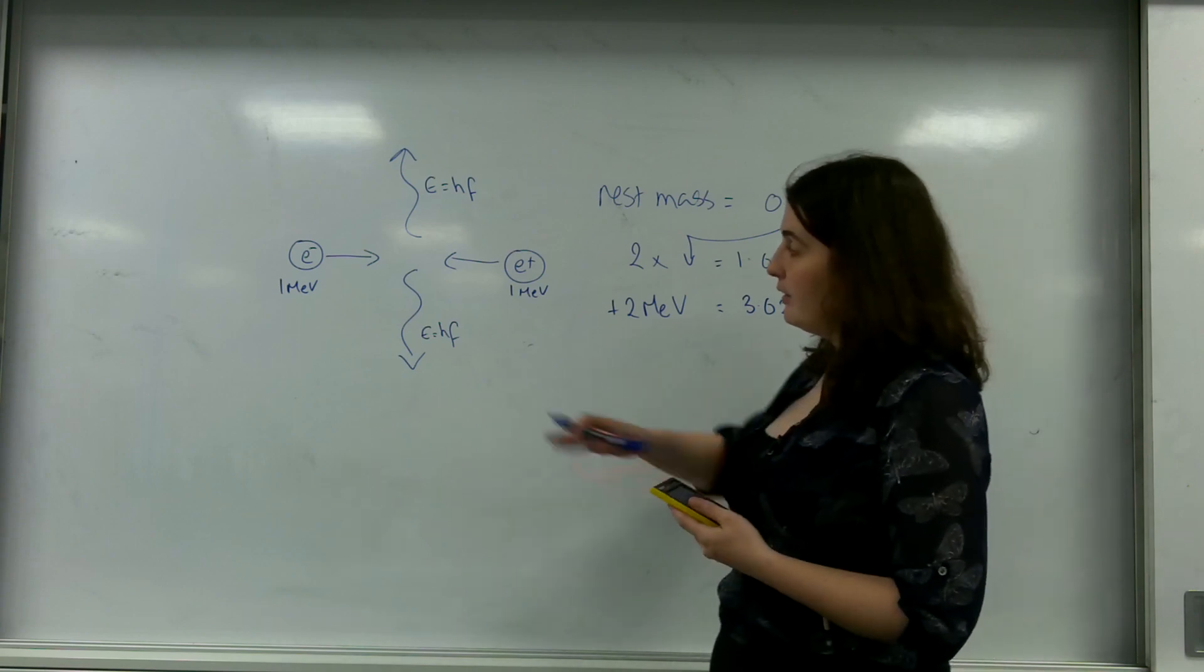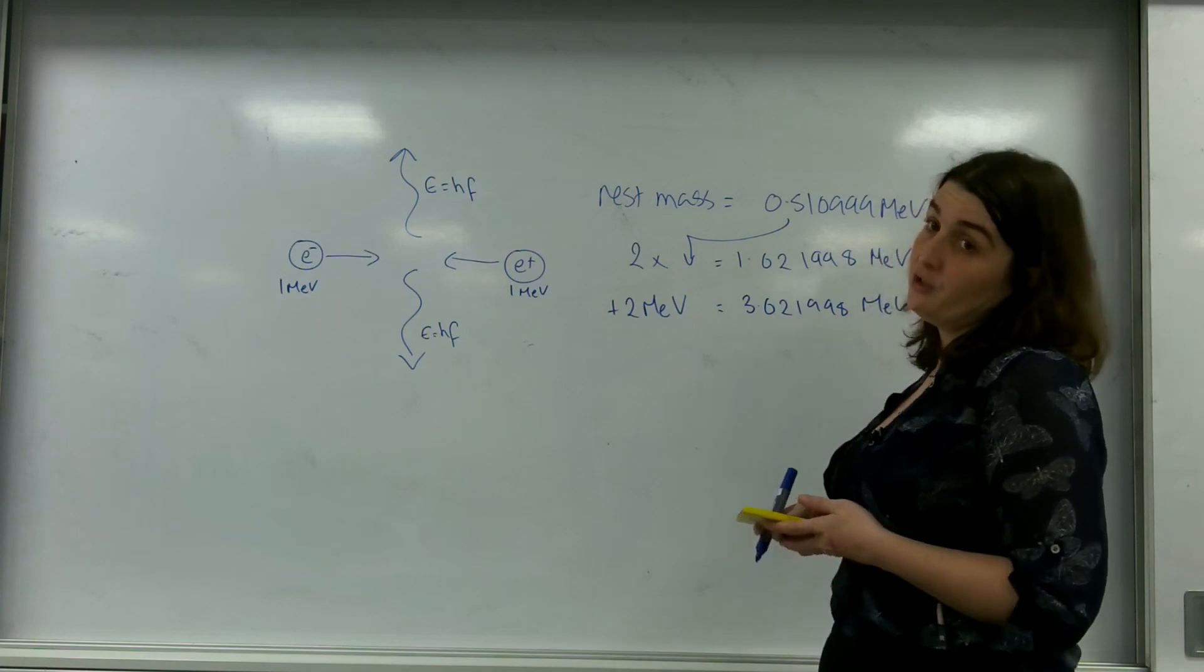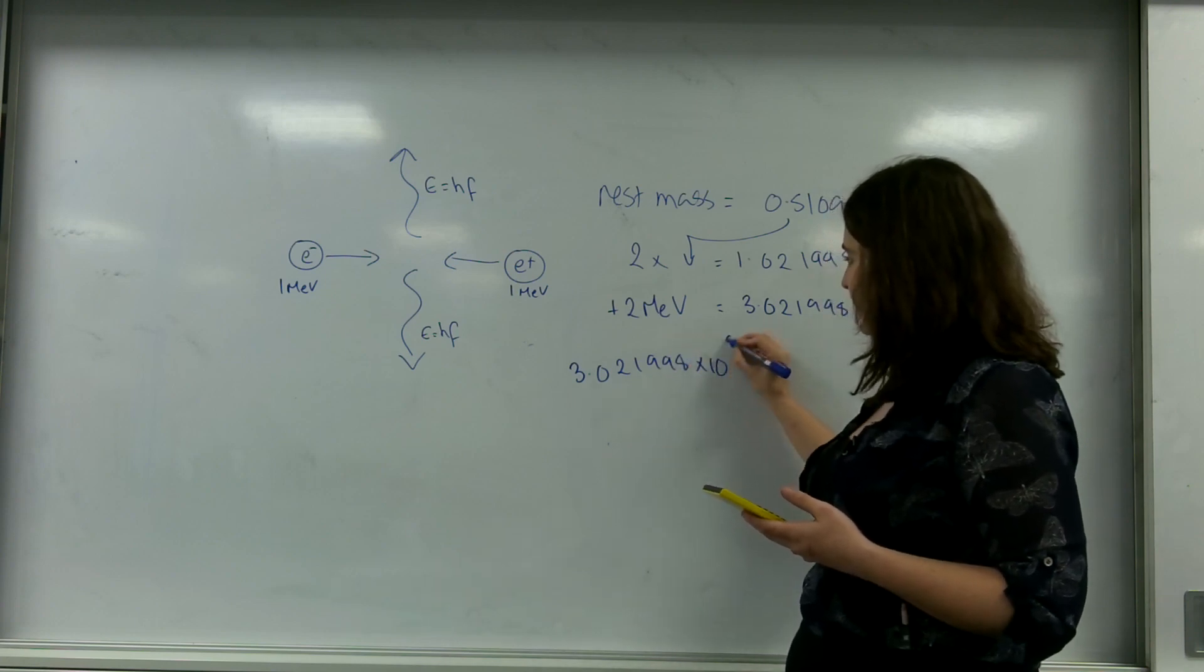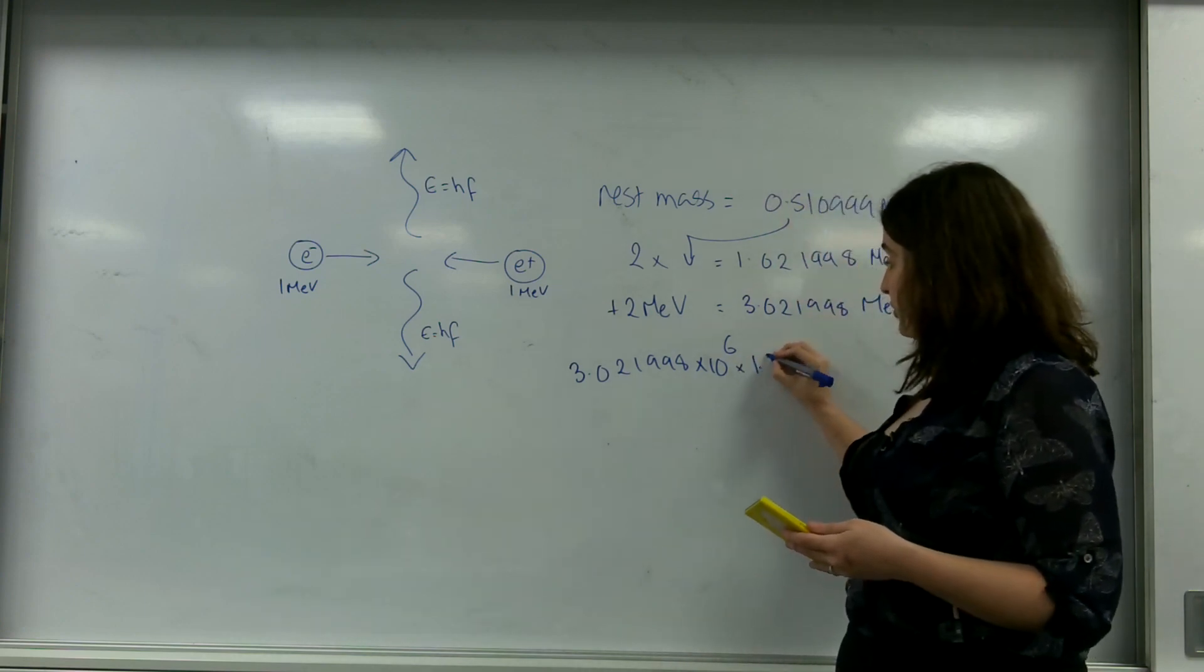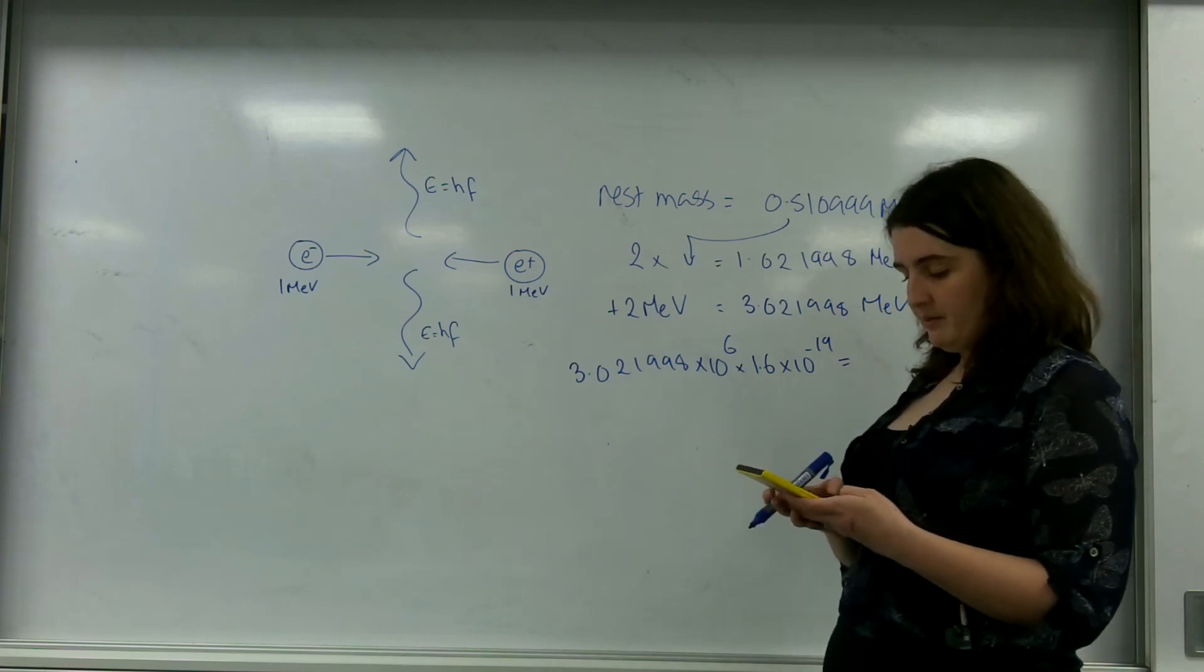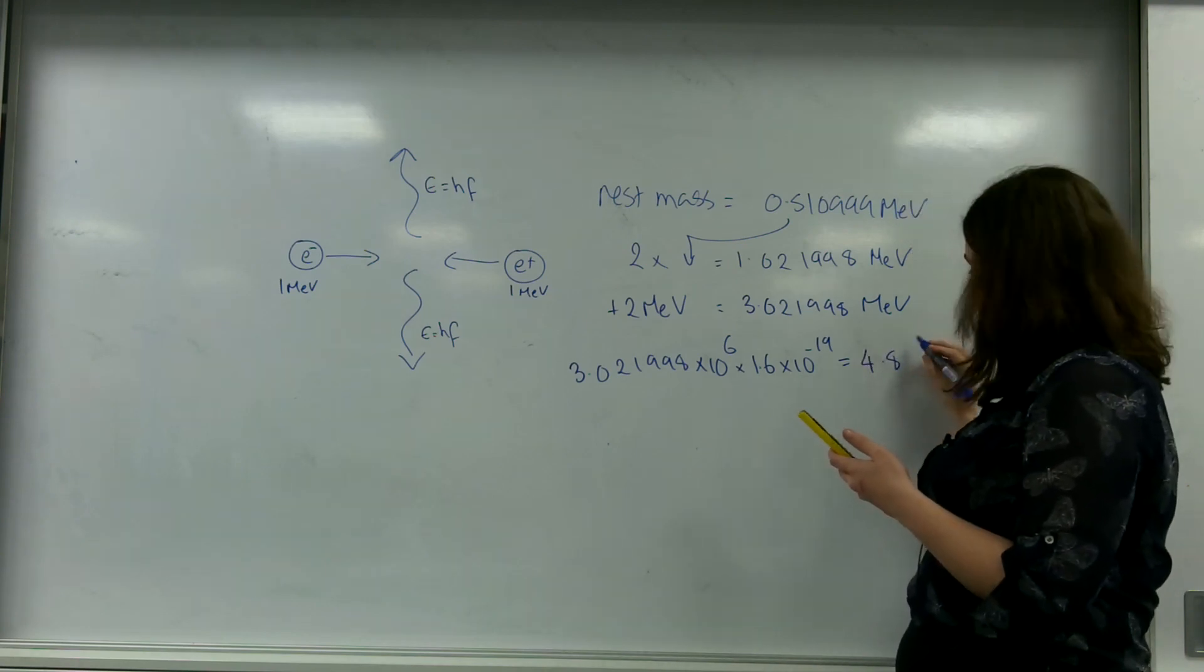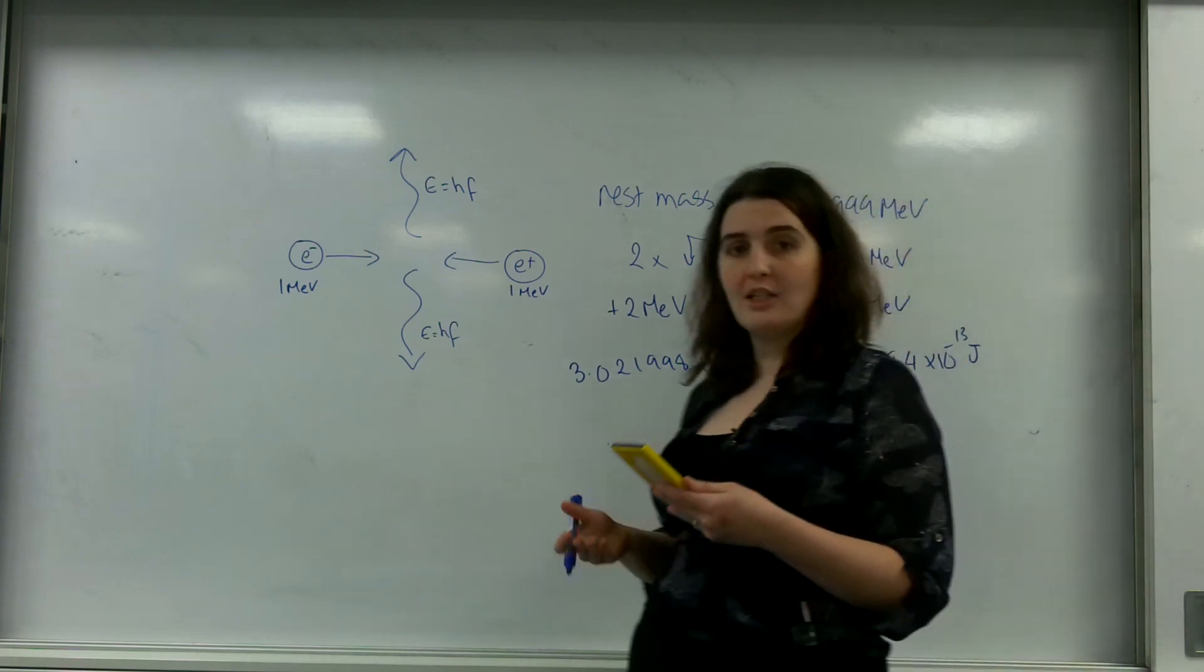Before I can even work out the photons, I need to convert this into joules. So 3.021998 times 10 to the 6, that gets me into electron volts, and then I times by the charge on an electron. So I have an energy of 4.84 times 10 to the minus 13 joules, and this is the total amount of energy.